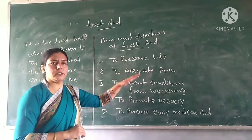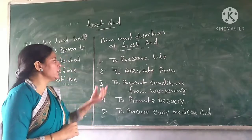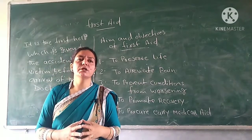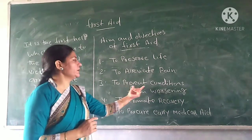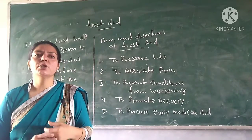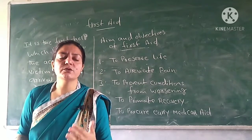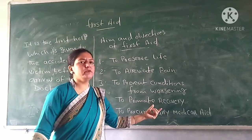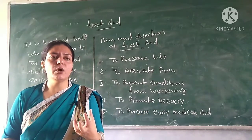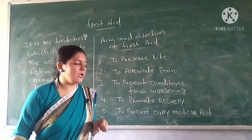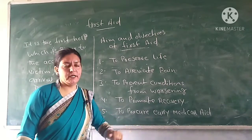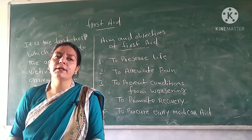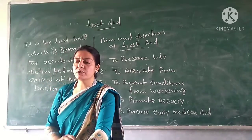The second aim of first aid is to alleviate pain and reduce swelling. The third aim is to prevent the condition from worsening — to stop the injured area from sustaining further damage. The fourth aim is also to prevent deterioration, and the fifth aim is to procure early medical aid — meaning to secure proper medical facilities as quickly as possible. These are the five aims of first aid.